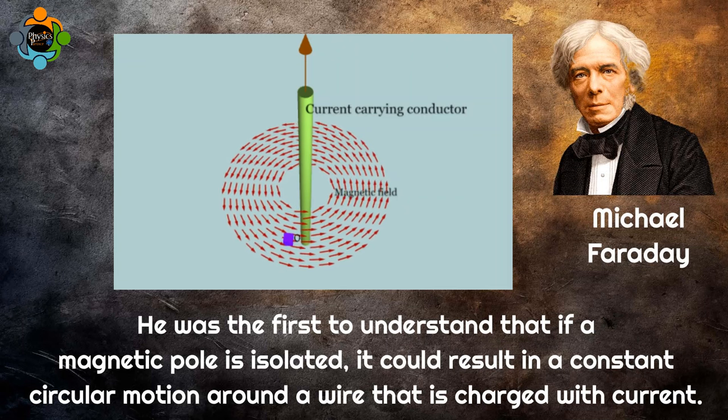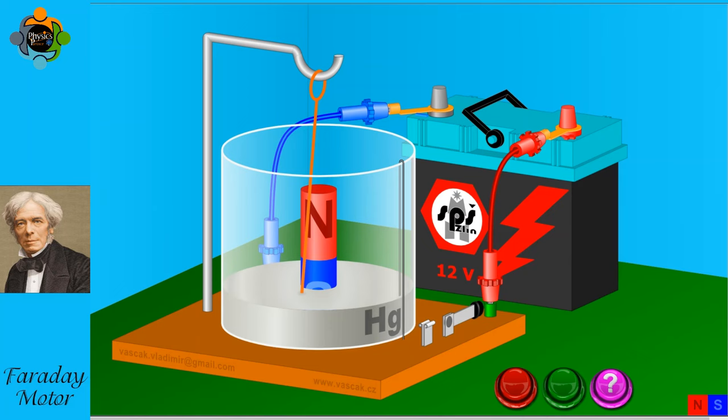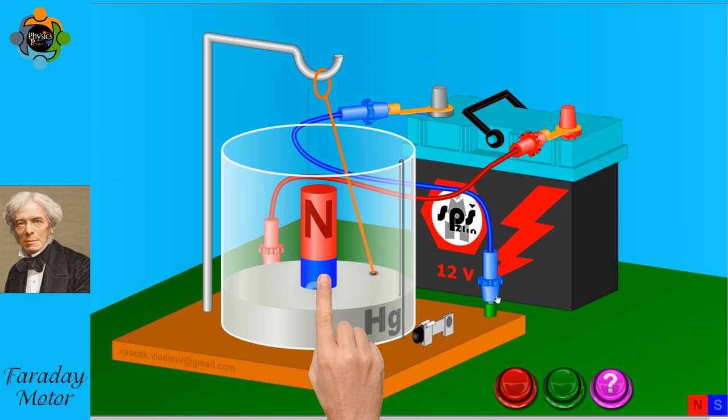To make the motor function, Faraday created a basic circuit that was composed of a wire, battery, and a dish of mercury. This dish with mercury served as the conductor. A permanent magnet was also attached to the center of the dish.